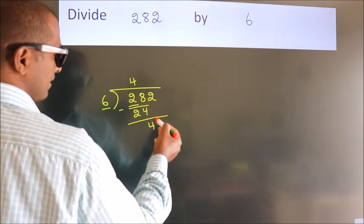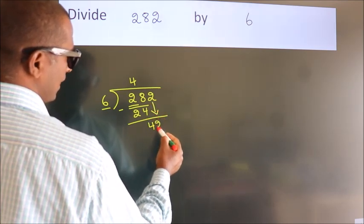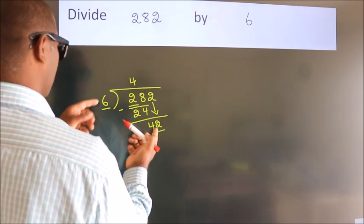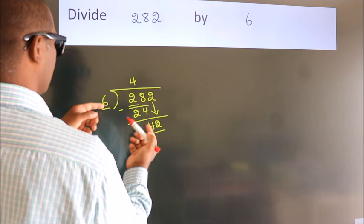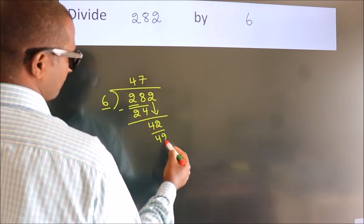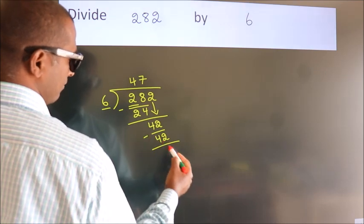After this, bring down the beside number. So 2 down. So 42. When do we get 42 in the 6 table? 6 sevens is 42. Now we subtract. We get 0.